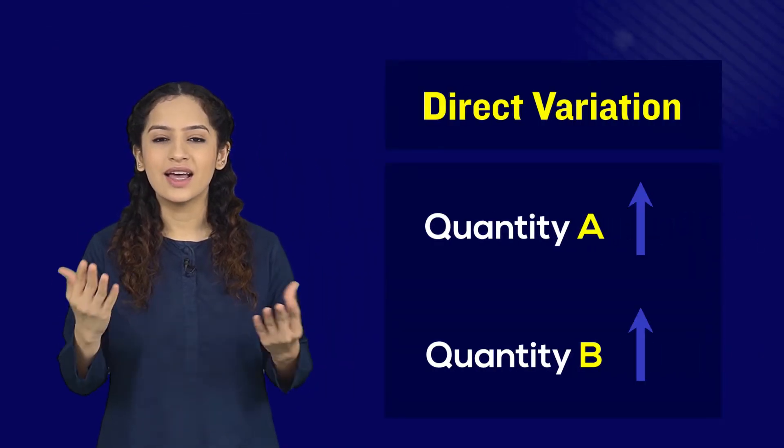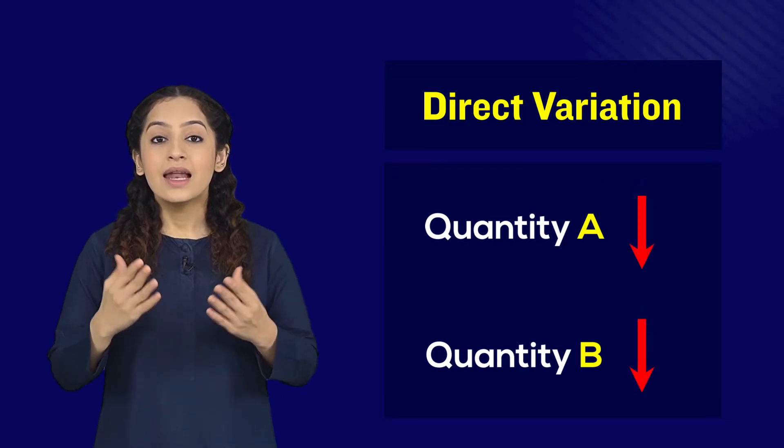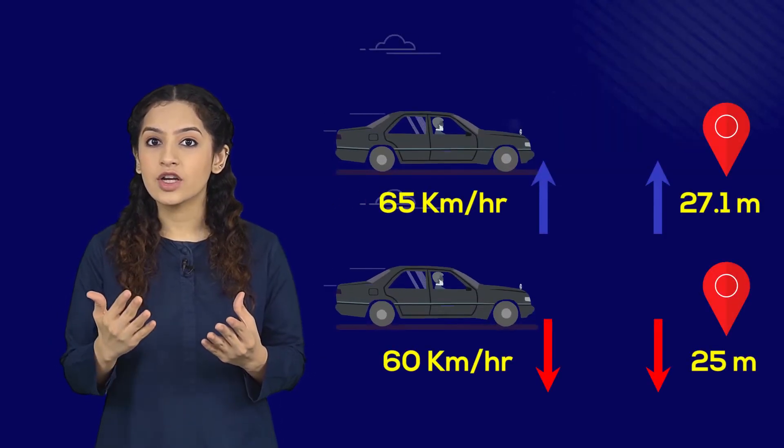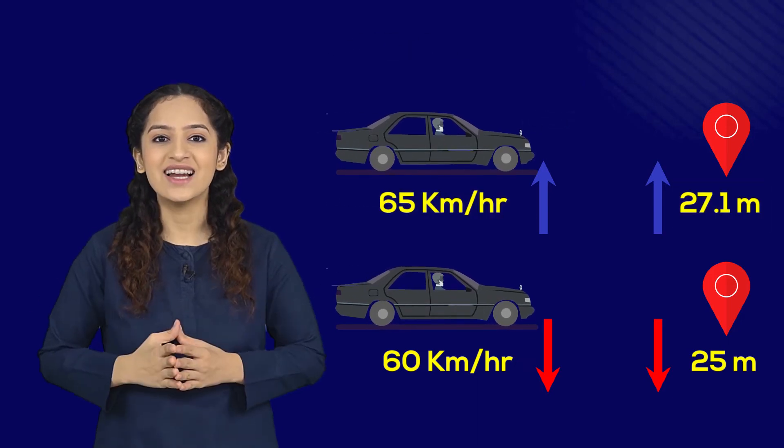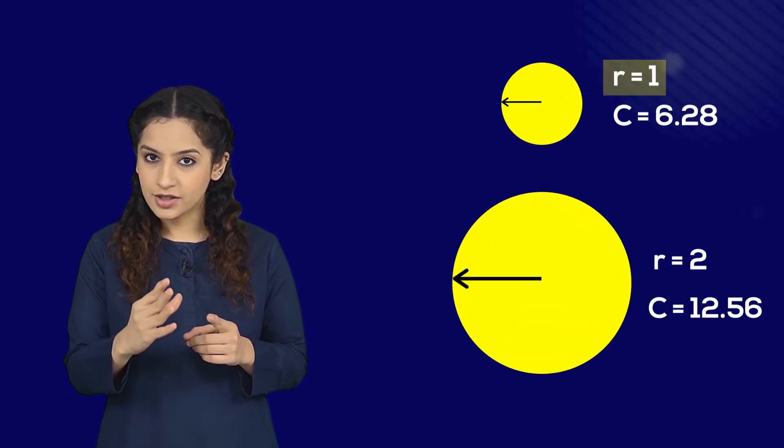Like the relation of car speed with the distance covered. More speed, more distance, and the chance of a traffic violation. Or the relation of the radius and the circumference. Smaller the radius, the smaller the circumference.